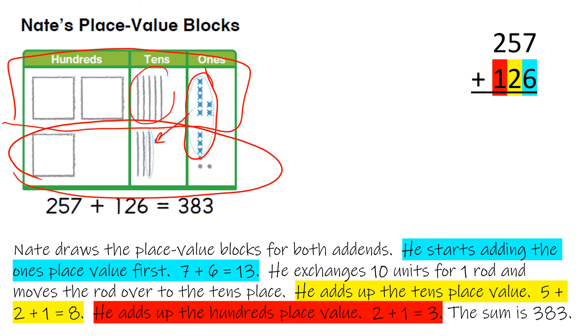We've got the 5, we've got the 2, and this 1 is from the ones place. And that equals 8. He adds up the hundreds place value, 2 plus 1 equals 3. The sum is 383.